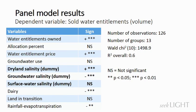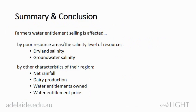These results also confirm other study findings on the relationship between water entitlement trading and water entitlements owned, water entitlement price, and land use. We also have a water scarcity effect, which means that regions affected by low rainfall rates sell larger volumes of water entitlements. Overall, environmental factors such as salinity and rainfall have an impact on water entitlement trading, but dryland salinity and groundwater salinity have a more important effect than surface water salinity.